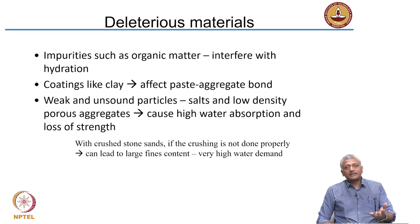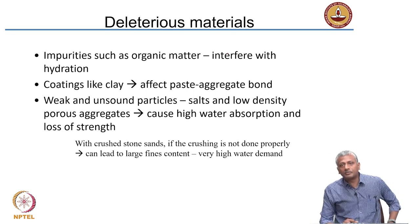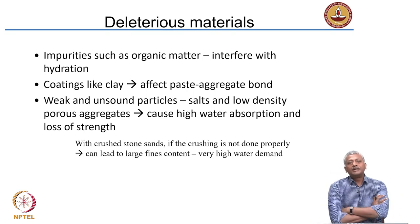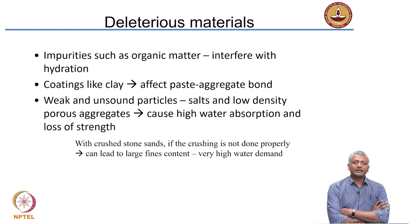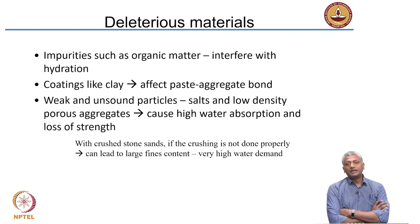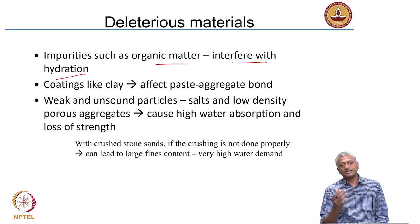Depending upon where you collect your material from, you can get different types of deleterious materials — poor quality materials inside the aggregate like organic materials and clay — which will affect the properties of the concrete. Organic materials can interfere with the hydration reaction of the cement and slow it down significantly, so you want to restrict organic material.